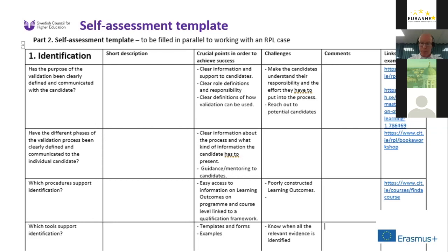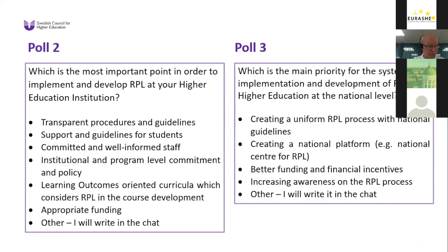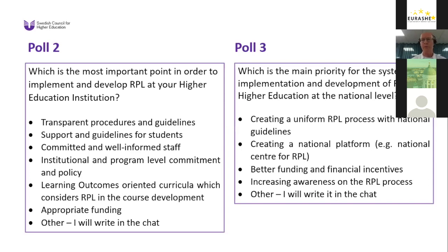We will have two more polls. We would like to hear your opinions on two questions: which is the most important point in order to implement and develop RPL at your higher education institution, and which is the main priority for systematic implementation and development of RPL in higher education at the national level? To answer these two questions, you need to scroll to get to question number two. By answering this poll, you will also contribute to the conclusions of the project.